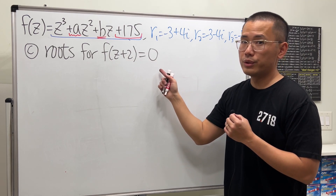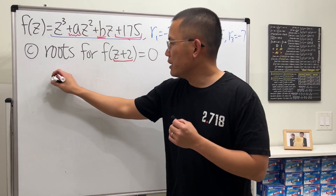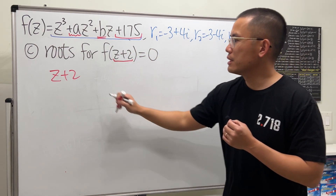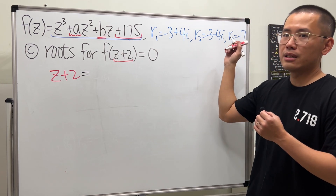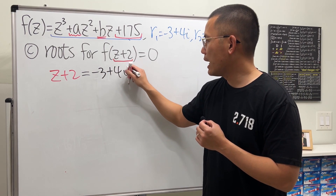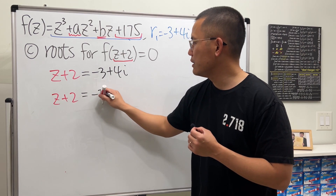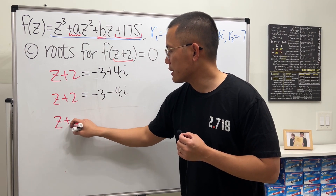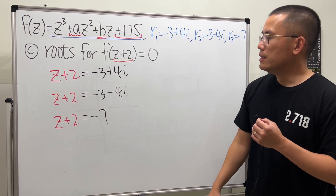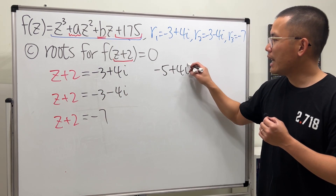For the last part, we write down all the roots of f(z + 2) = 0. Here z + 2 acts as the new input, so to find roots we set z + 2 equal to each root of f(z) = 0, then subtract 2. Setting z + 2 = negative 3 plus 4i gives z = negative 5 plus 4i.